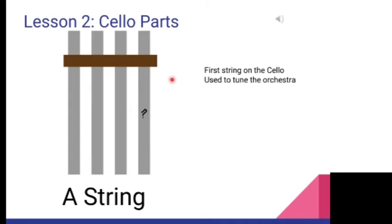I want to briefly talk about the picture that you're seeing here. It's a crude drawing of the strings in the bridge, and it is a flattened view of where the strings are as you hold it. And as you see, the first string is A.